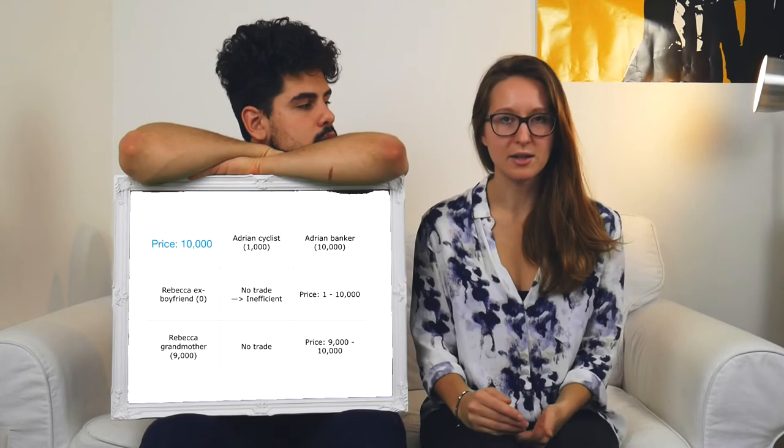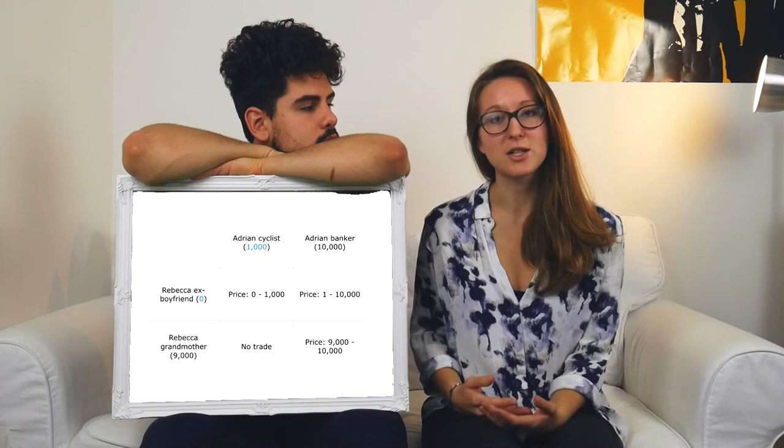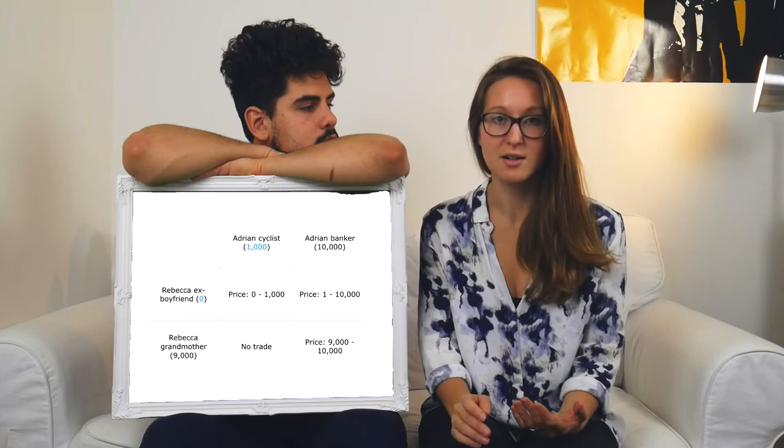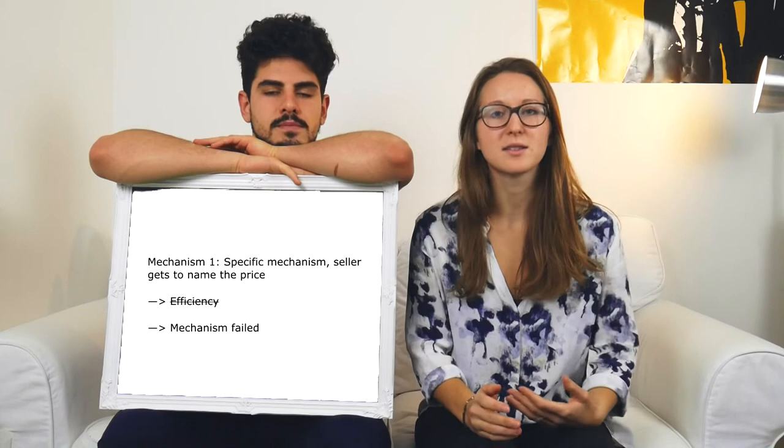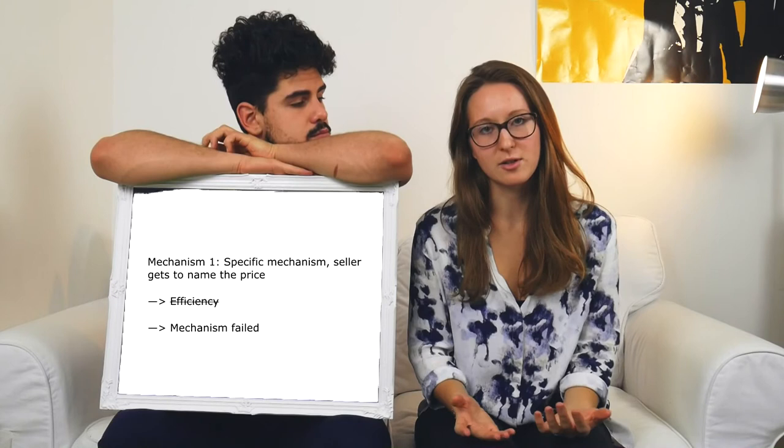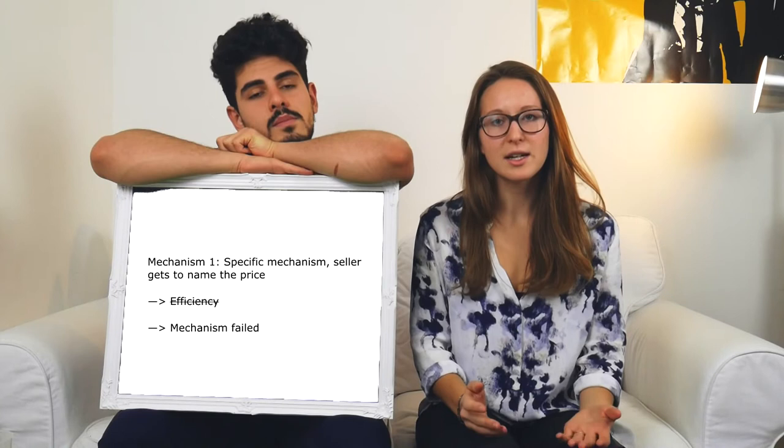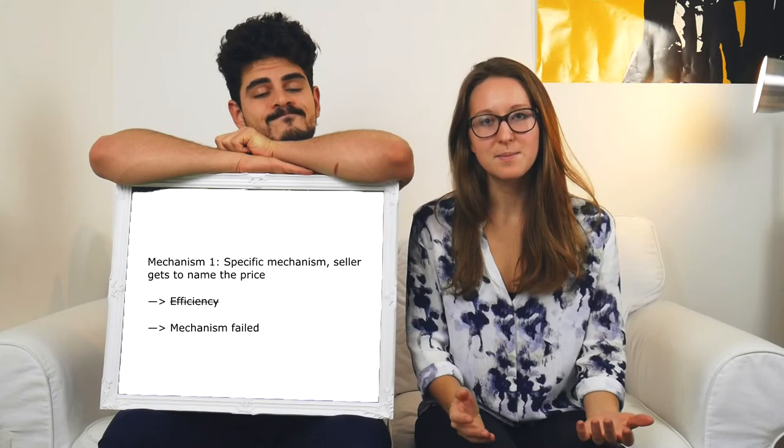That is because trade between the cyclist and Rebecca who is selling her ex-boyfriend's car does not take place, but trade between them actually should take place — because the cyclist's valuation is higher than Rebecca's valuation for the car, so if they were to trade they would both be better off. If instead the specific mechanism was designed so that Adrian and not Rebecca would name the price, the same inefficiency would occur. So it doesn't matter which party has the bargaining power, because the allocation will be inefficient either way. We have to continue our search for a mechanism.